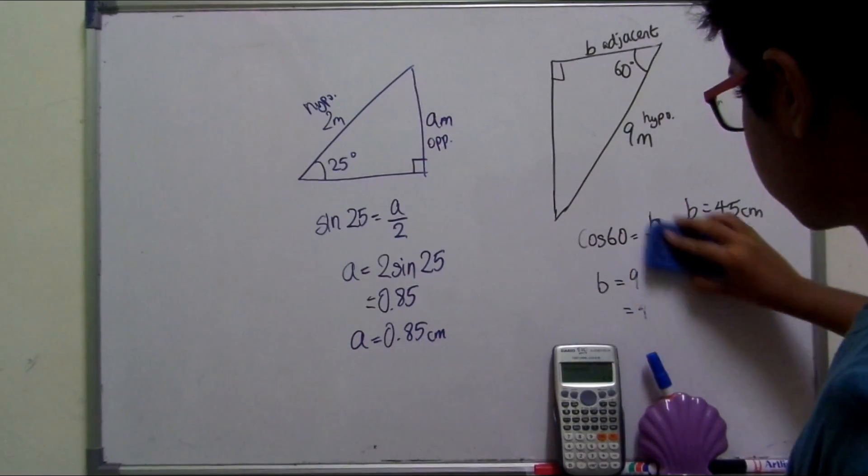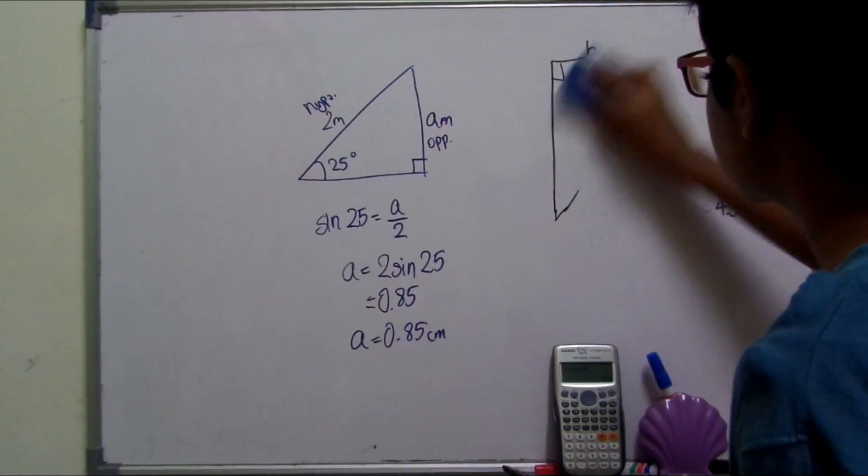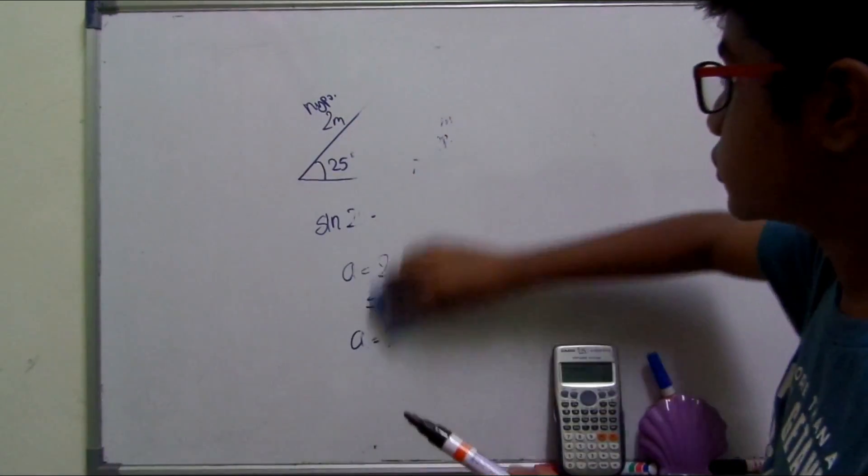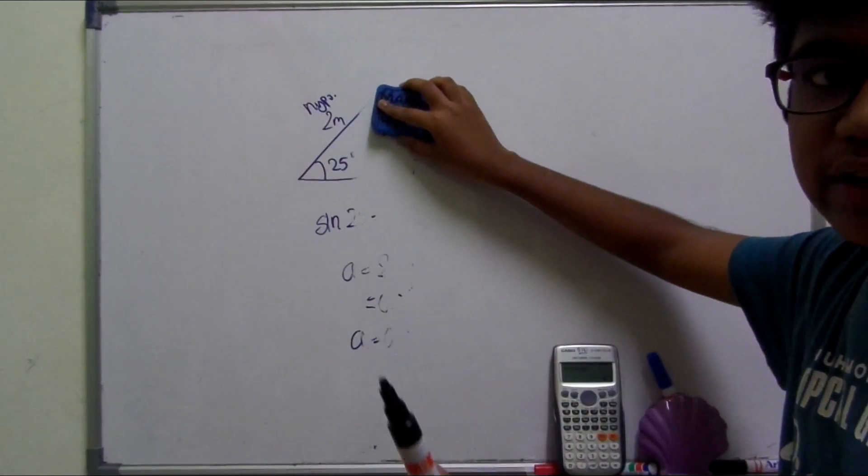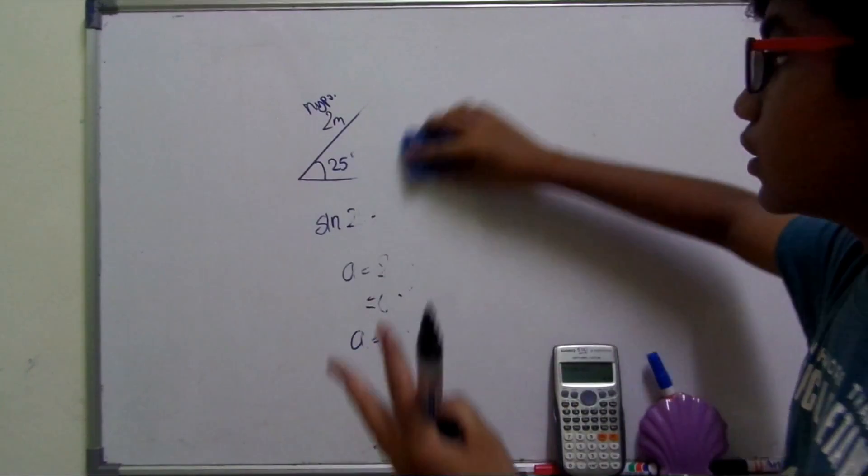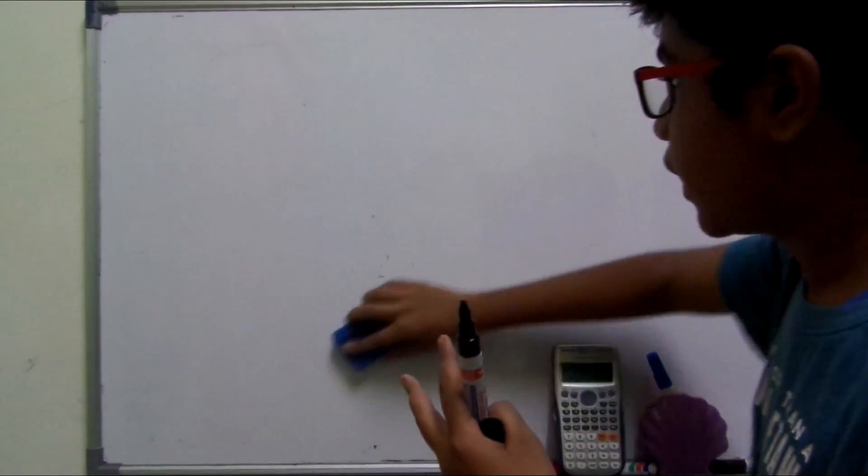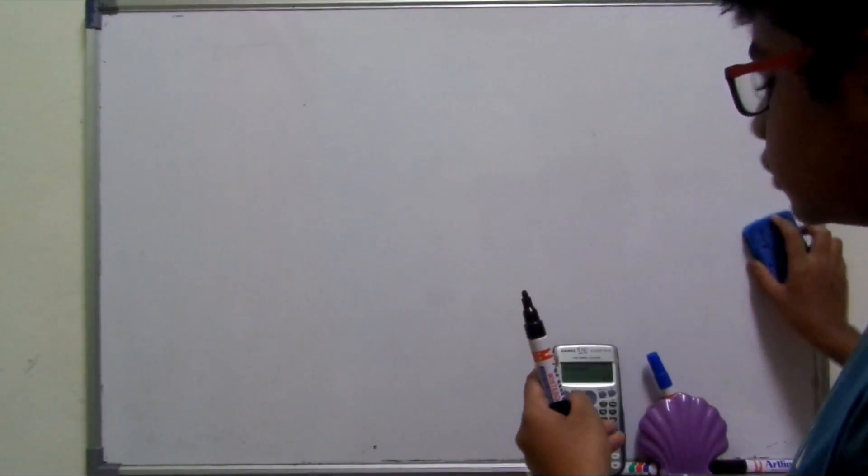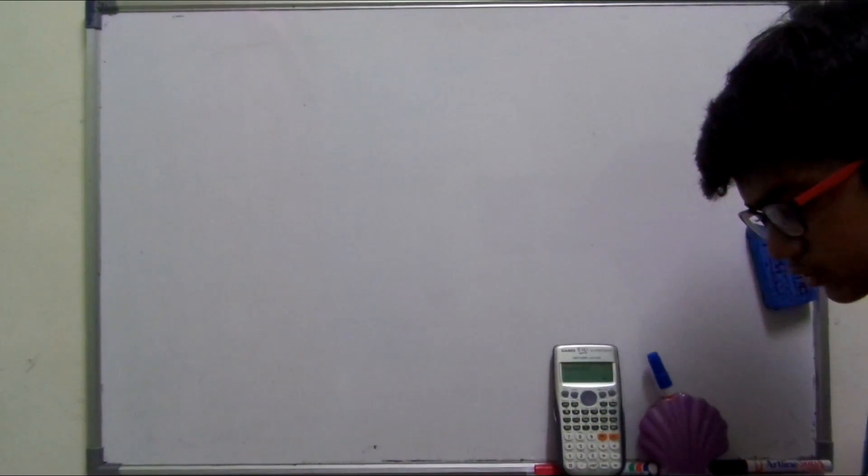This is exactly how you work out unknown values in a right-angled triangle. The conditions are a right-angled triangle, one angle given, and one side given. And then you can be expected to use trigonometry to find the length of the unknown side. It's as simple as that.